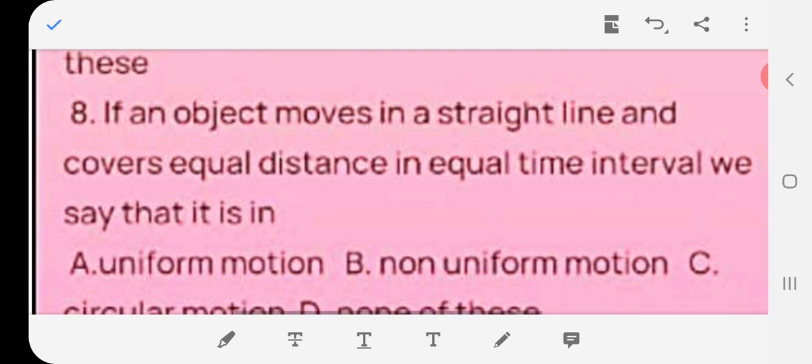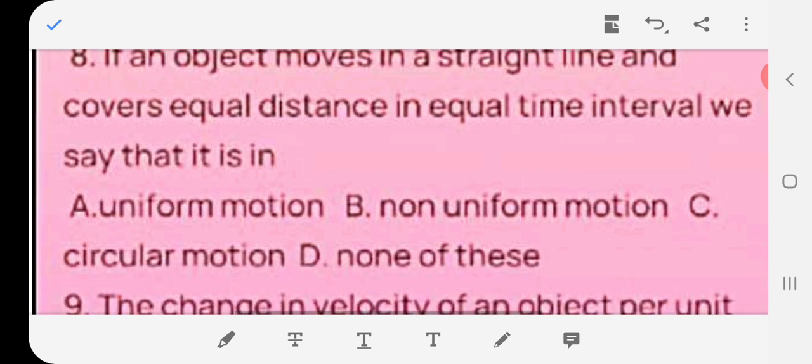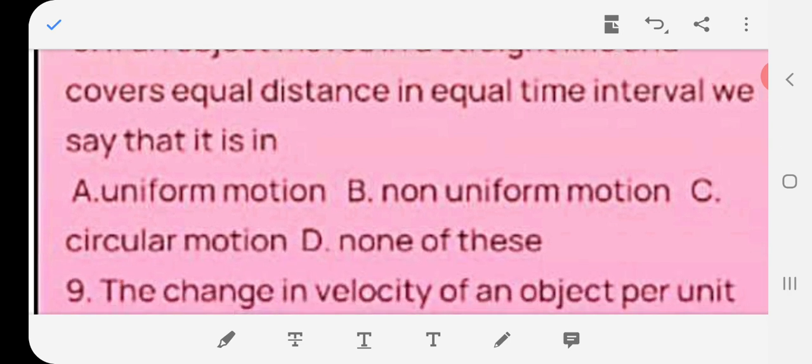If an object moves in a straight line and covers equal distance in equal time interval, we say that it is in A uniform motion, B non-uniform motion, C circular motion, D none of these. The answer is A uniform motion.